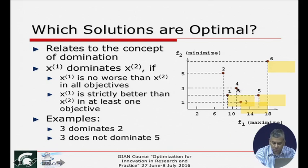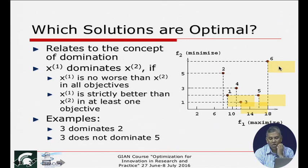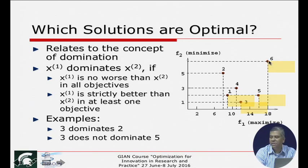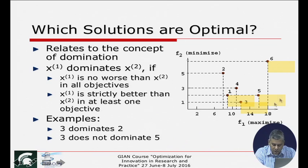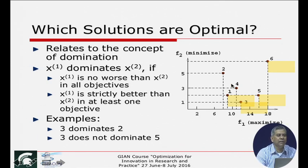Non-dominated solutions are the best solutions because they are not dominated by any member of the population. If you could consider all feasible points in the entire search space and find which are non-dominated, those are Pareto optimal. Now, we also have the concept of non-dominated sorting: first find the non-dominated set (the best solutions), then temporarily remove them, and find the non-dominated set of the remaining points. That gives the second level of non-domination. Repeat until all points are ranked.